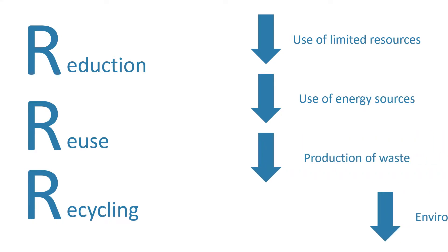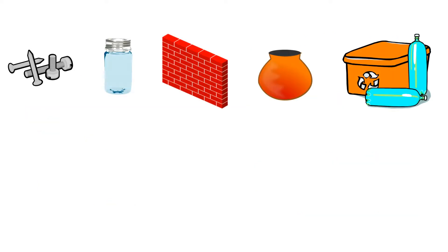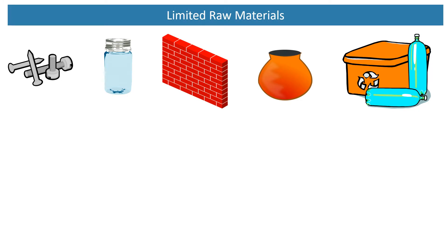We can reduce the production of waste and negative environmental impacts. Lots of the materials we use in everyday life, such as metals, glass, building materials, clay, ceramics, and most plastics, are produced from limited raw materials.